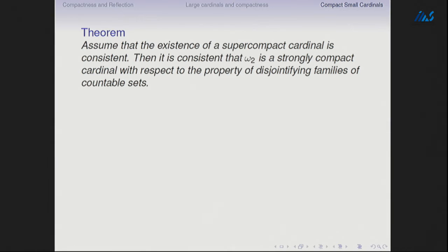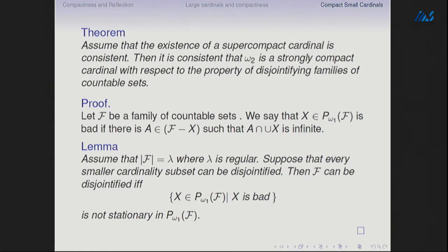Assuming the existence of a supercompact cardinal, it is consistent that ℵ₂ is a strongly compact cardinal with respect to the property of disjointifying families of countable sets. Let's see how to get the consistency of strong compactness for this property. The construction of the model is very simple. Here is a family of countable sets. A standard notation: P_{ω₁}(f) is the collection of all countable subsets of f. In general, P_κ(λ) is the set of all subsets of λ of cardinality less than κ.